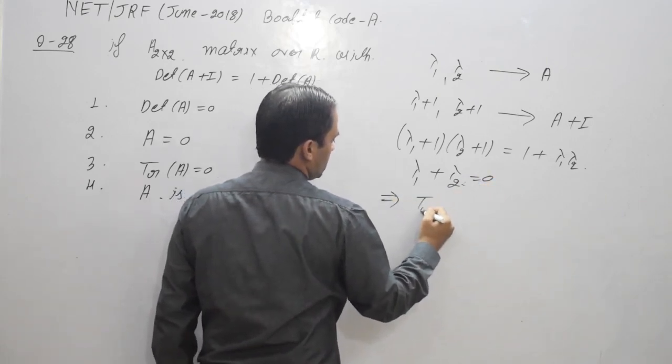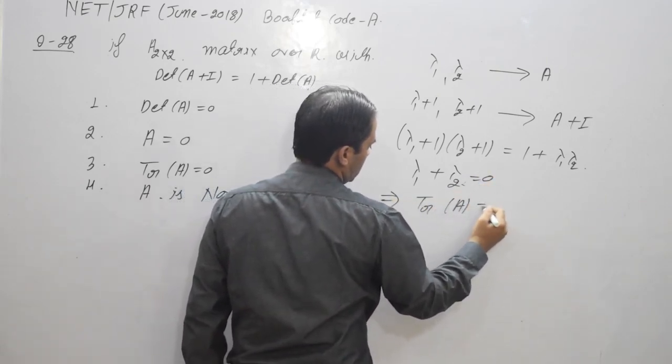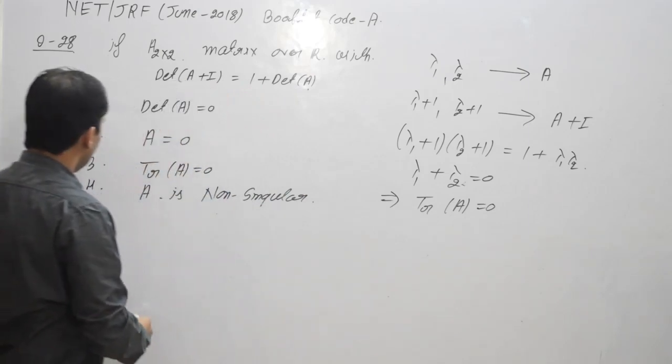This implies trace of this matrix is always 0. So third option is definitely correct.